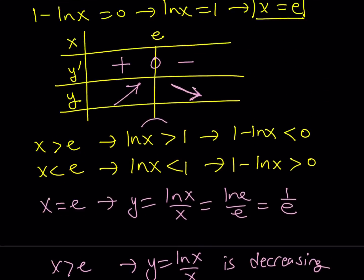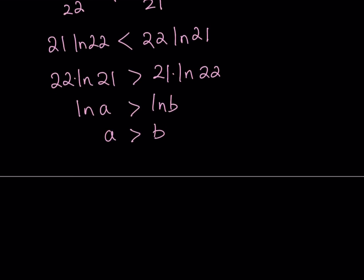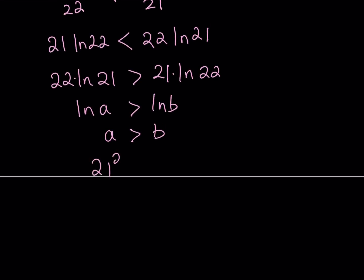And this means that, remember, we named A and B something, 21 to the power of 22 is going to be greater than 22 to the power of 21.